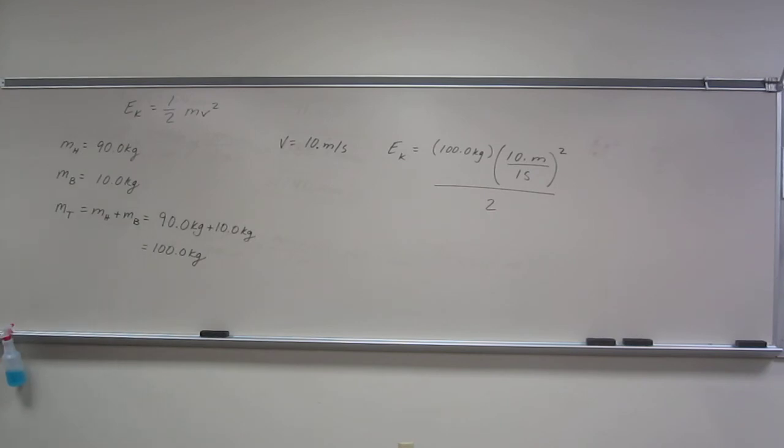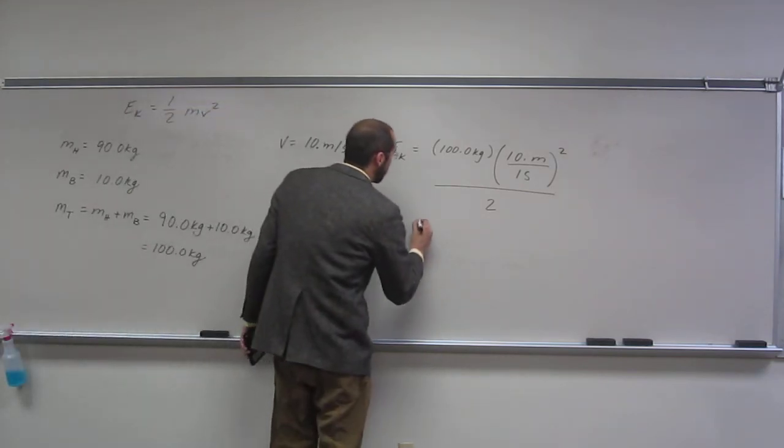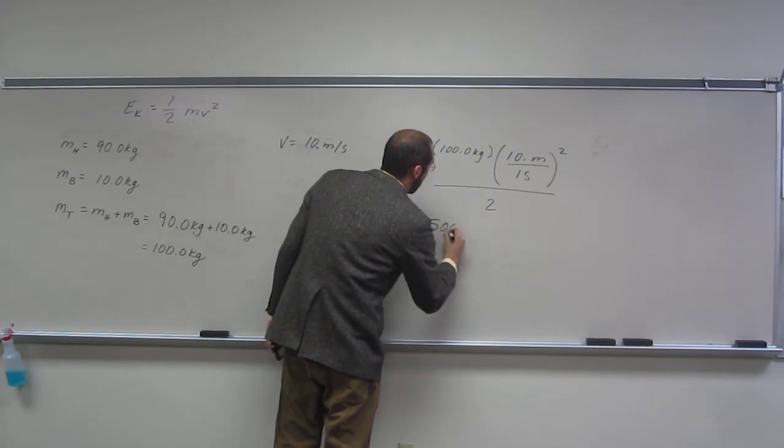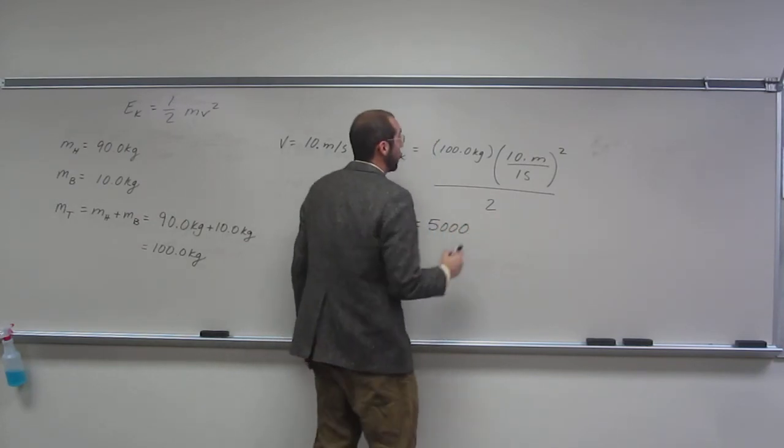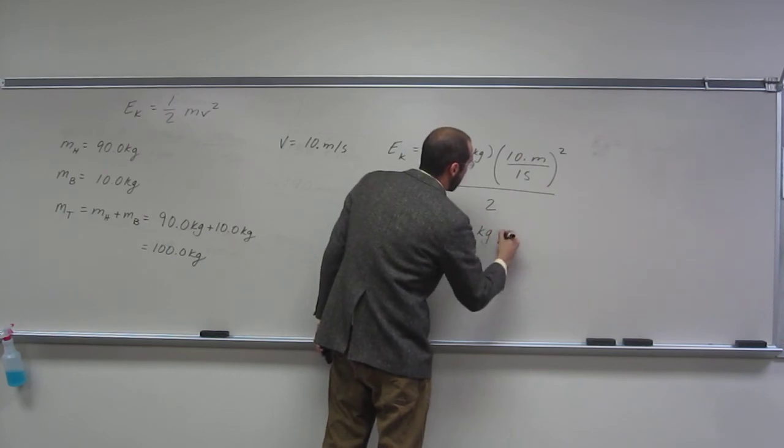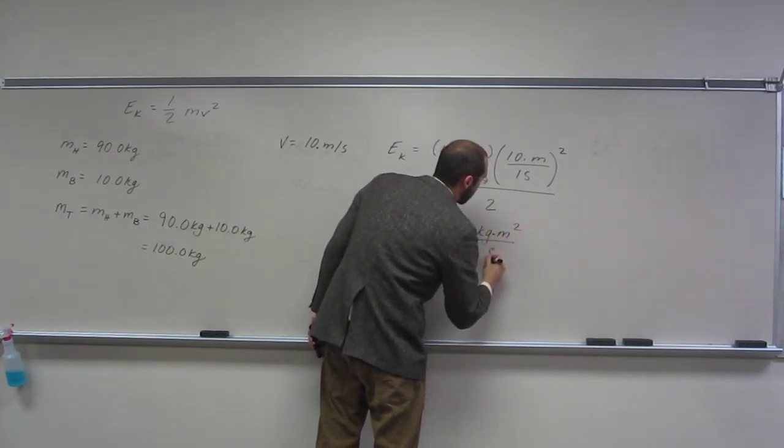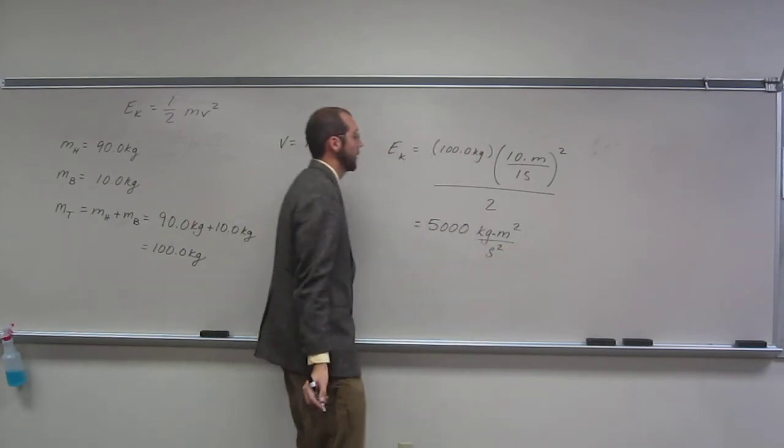So this is going to be 10 squared, of course, is 100 times 100. It's 10,000 divided by two. 5,000.